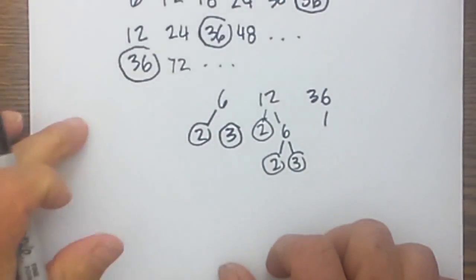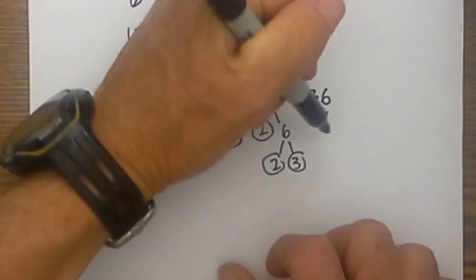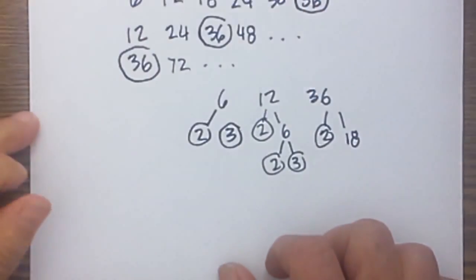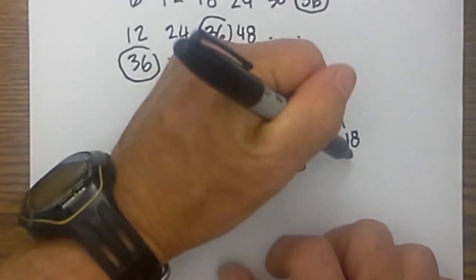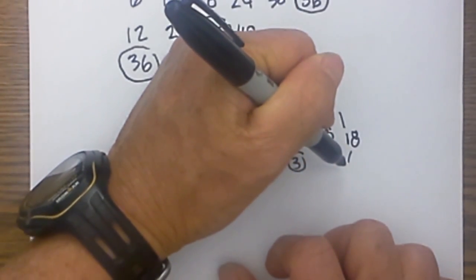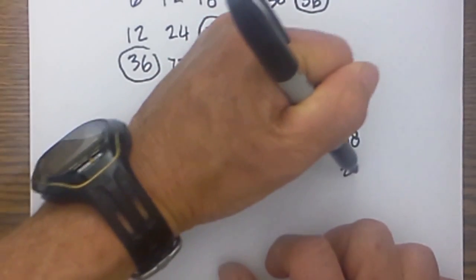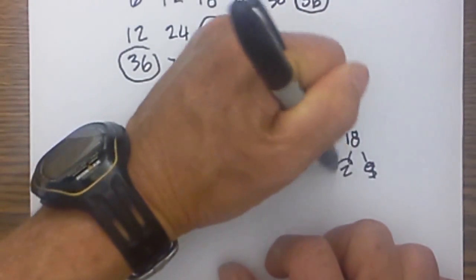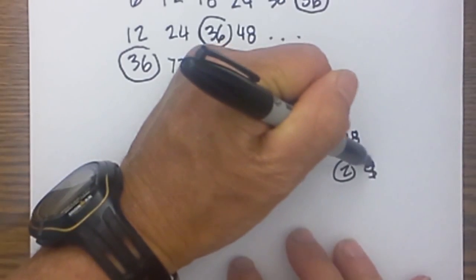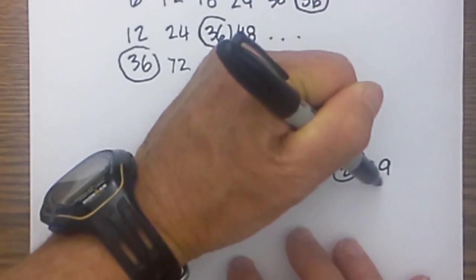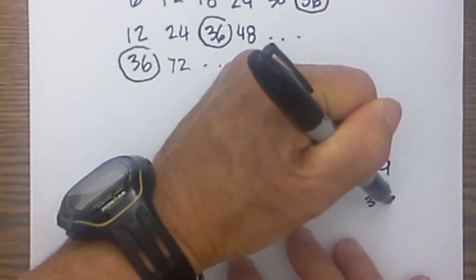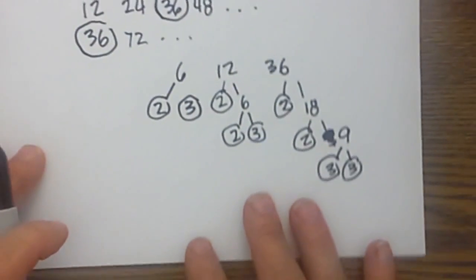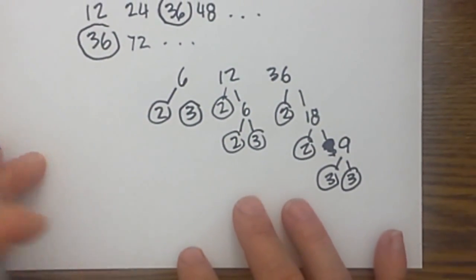And then with 36 you have 2 times 18, circle the 2 because it is prime. And then for 18 let's go 2 times 9, circle the 2 and then 9, I will rewrite this, 9 is equal to 3 times 3 and now that is prime.